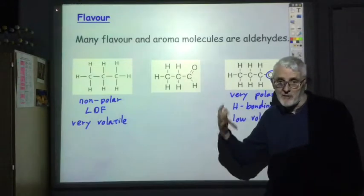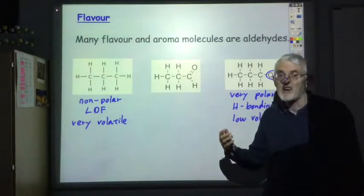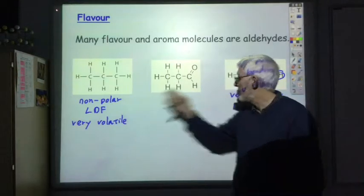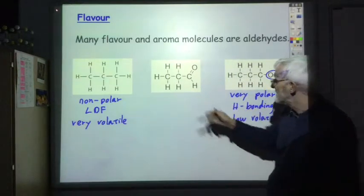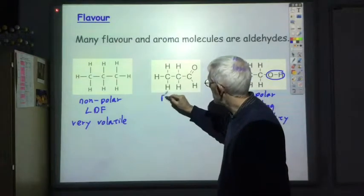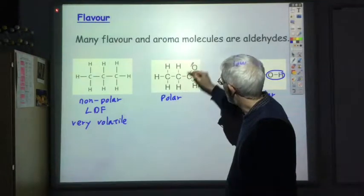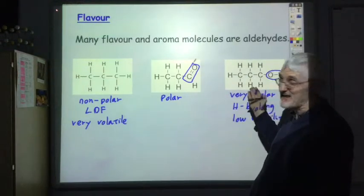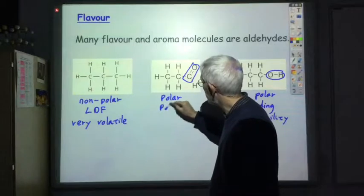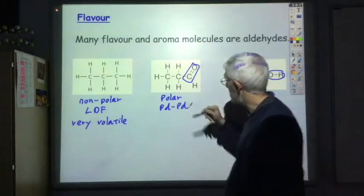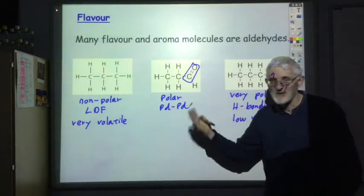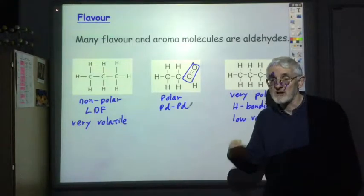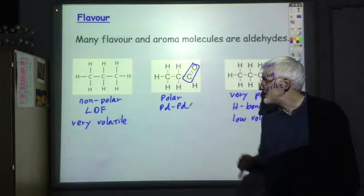Aldehydes, however, in terms of flavor and aroma, are in the Goldilocks zone. They're not too volatile, but they're volatile enough. So it's a polar molecule. The C double bond O is quite a polar bond, but it's not nearly as polar as a hydrogen bond. So we get PD-PD interactions between the molecules, and this just gives it the right amount of volatility to hang around for long enough, but still turn into a gas and interact with the senses in the nose.